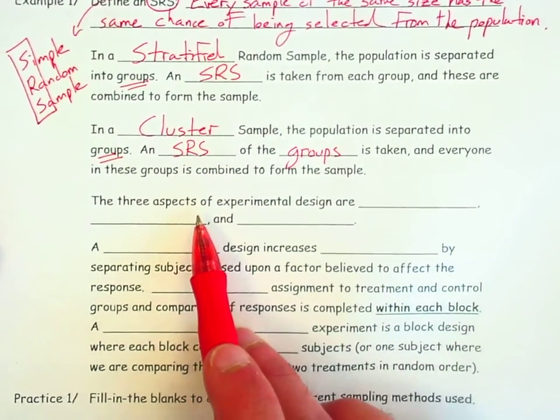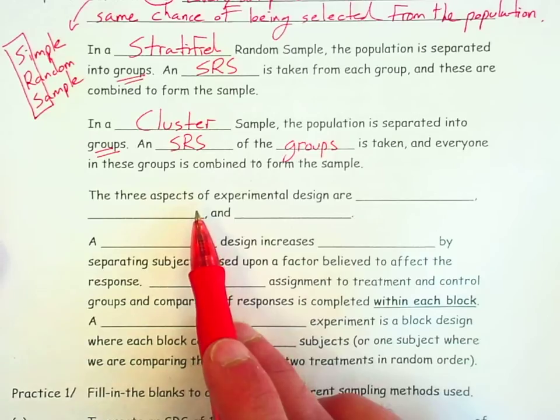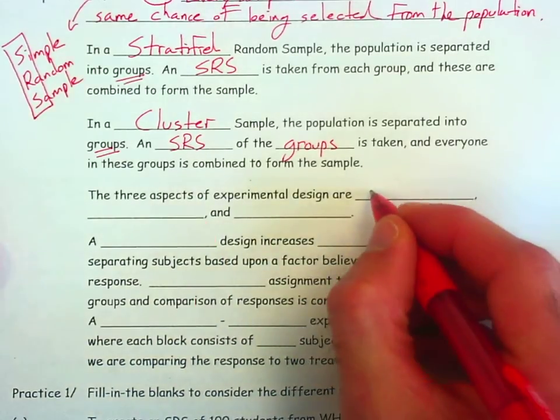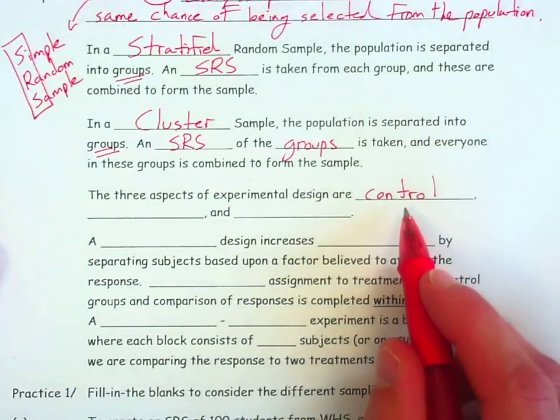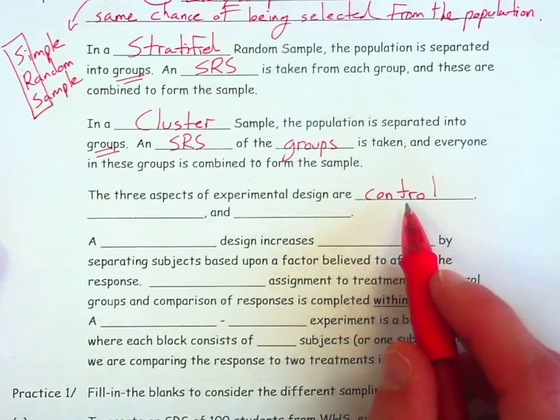In terms of experimental design, there are three characteristics that you want to make sure you understand. Control, and the most important type of control that we have is comparison. Within an experiment, we want to be able to compare the response to a treatment to, for instance, a control group. So being able to compare between a treatment and a control group, that is the most important way in which we can control.